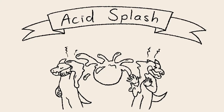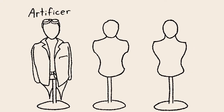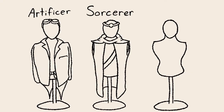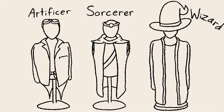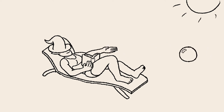Acid Splash is a conjuration cantrip from the list of spells that can be learned by artificers, sorcerers, and wizards. A cantrip is a spell you can cast as many times a day as you like, without exhausting your magic.